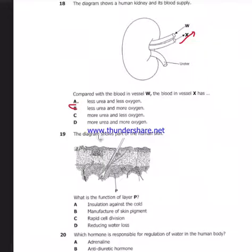Question 19 says: the diagram shows part of human skin. What is the function of layer P? Layer P is a adipose tissue layer that stores fat. And fat is used for insulation against cold.